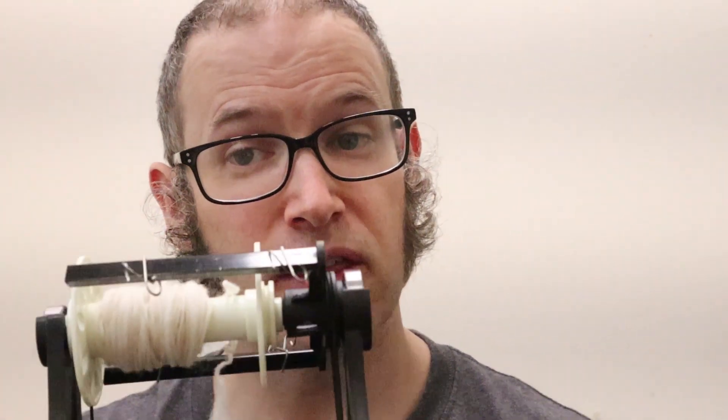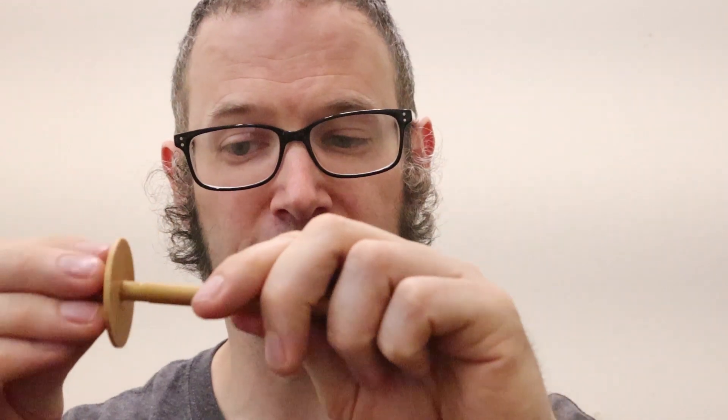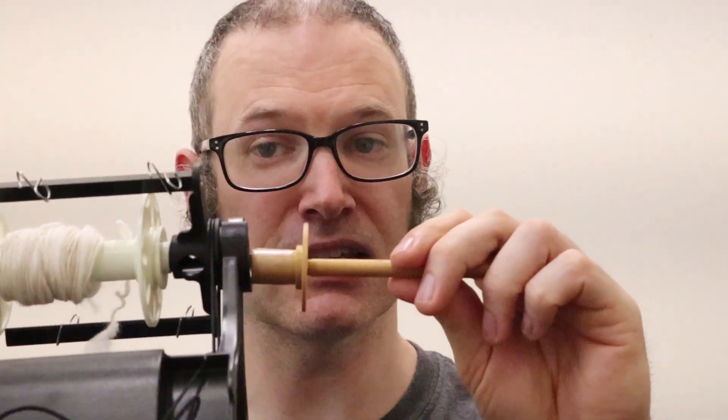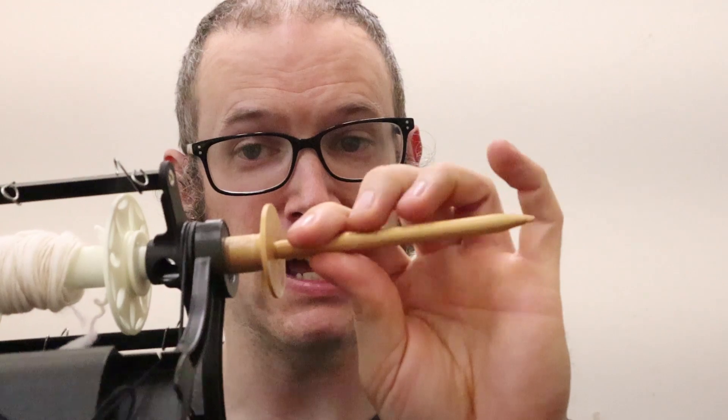Before this mechanism existed for spinning wheels, they used something more like this. So this is a quill. This is the same principle that a drop spindle works on. Basically, we're taking a drop spindle and sticking it to the front of the Electric Eel Wheel Nano.